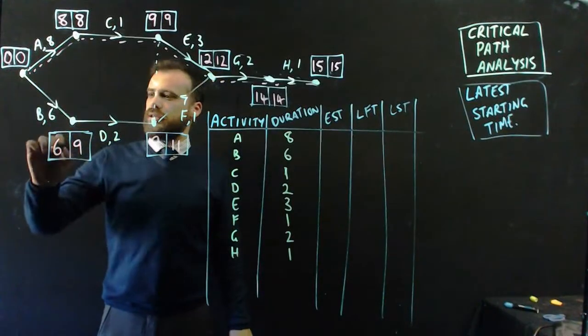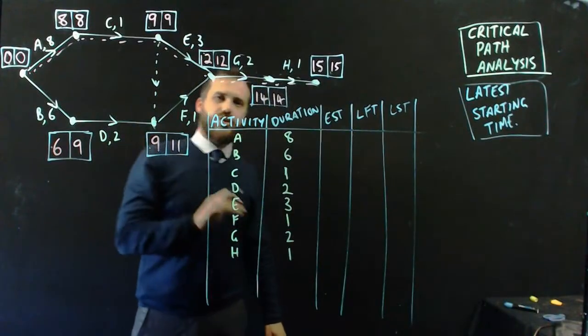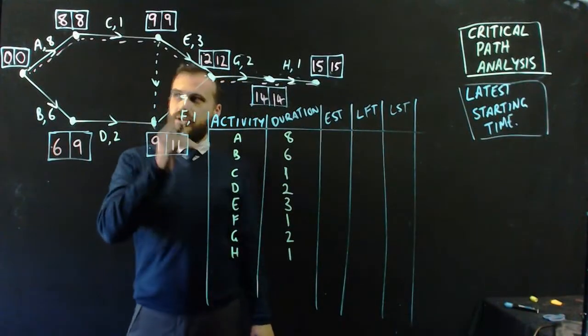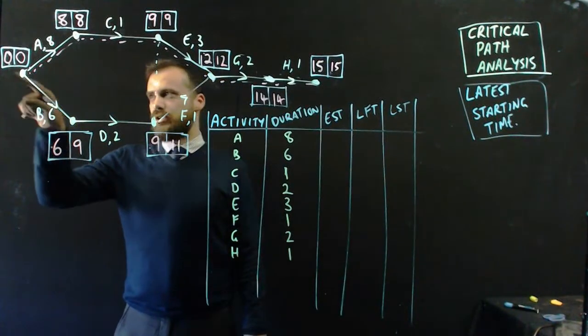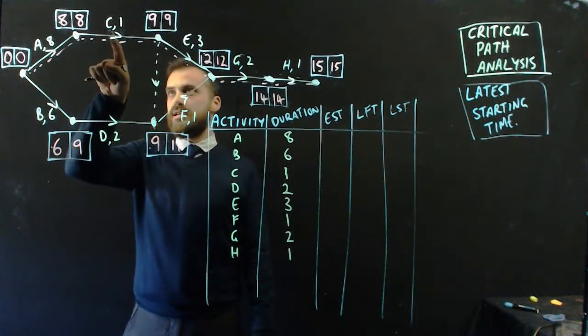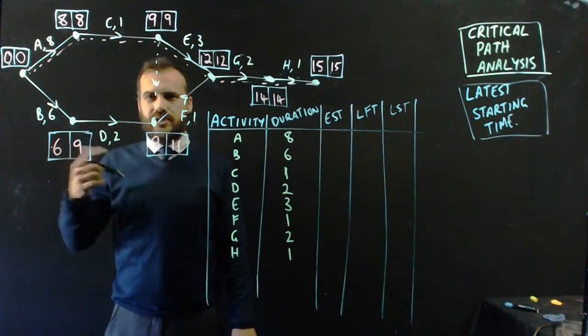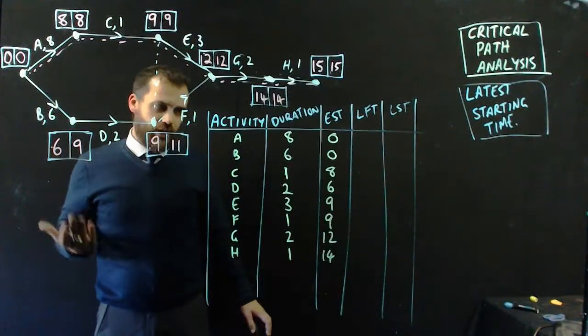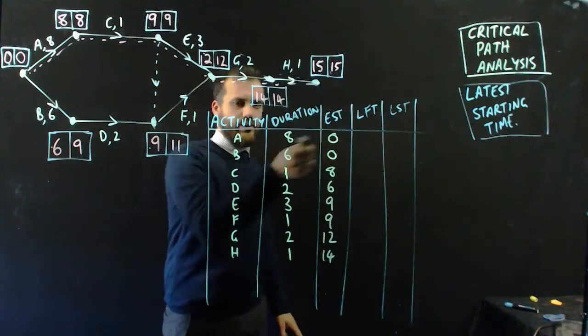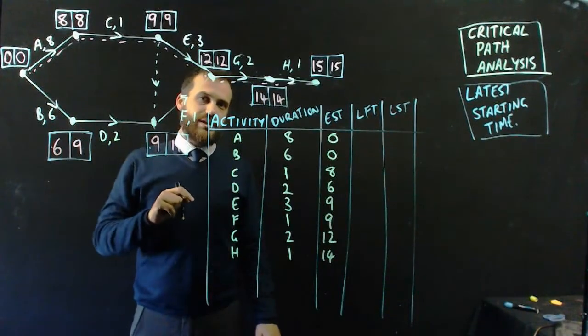Here, here, here. The left-hand side boxes tell us the earliest starting times for the activities. Now, you need to be careful here because A and B have the earliest starting time of that number there. C has the earliest starting time of that one. So it's the box that precedes the activity, the vertex before it. All right, let's fill that in. So far, so good. These are the earliest that these activities are allowed to start.